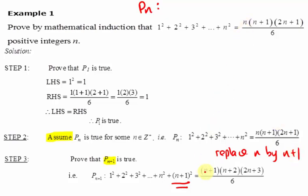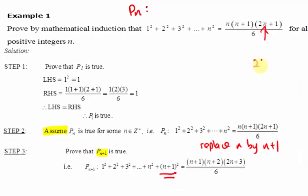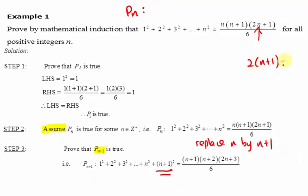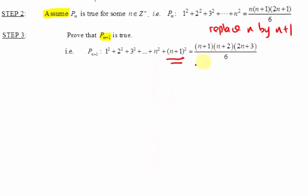The n in the expression is replaced by n plus 1. So n plus 1 plus 1 gives n plus 2, and 2n plus 1 plus 1 simplifies to 2n plus 3. That is why we have 2n plus 3 in the expression. This is the expression we are supposed to prove for Pn plus 1.